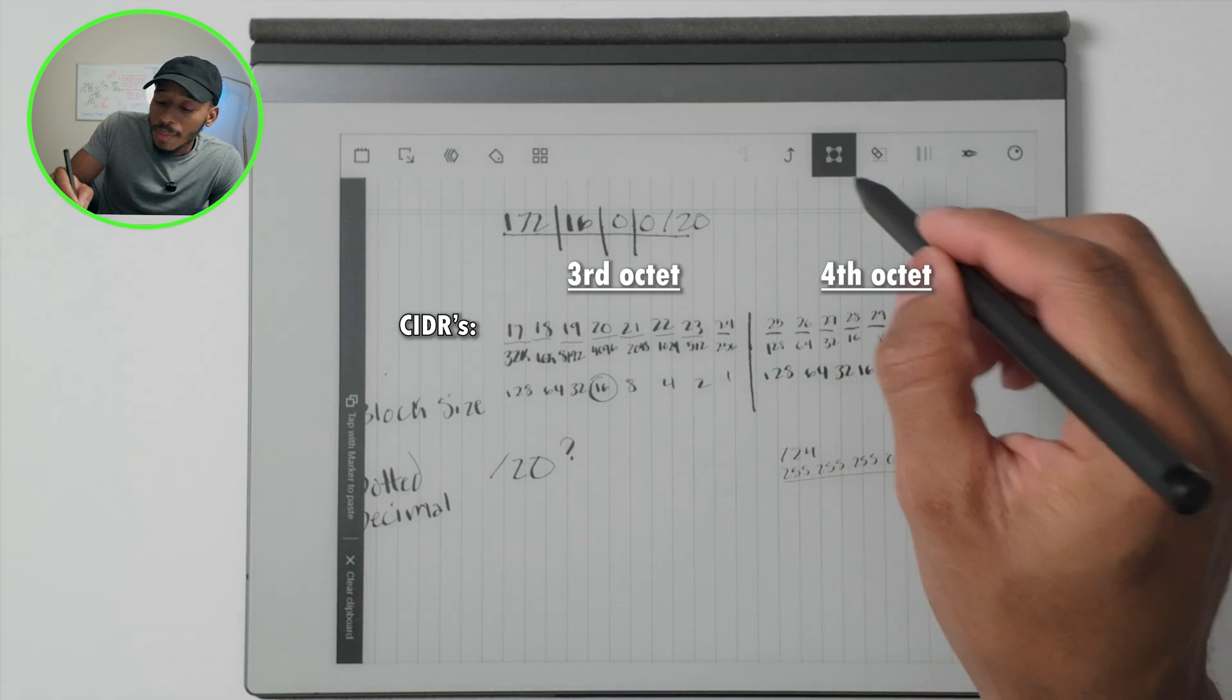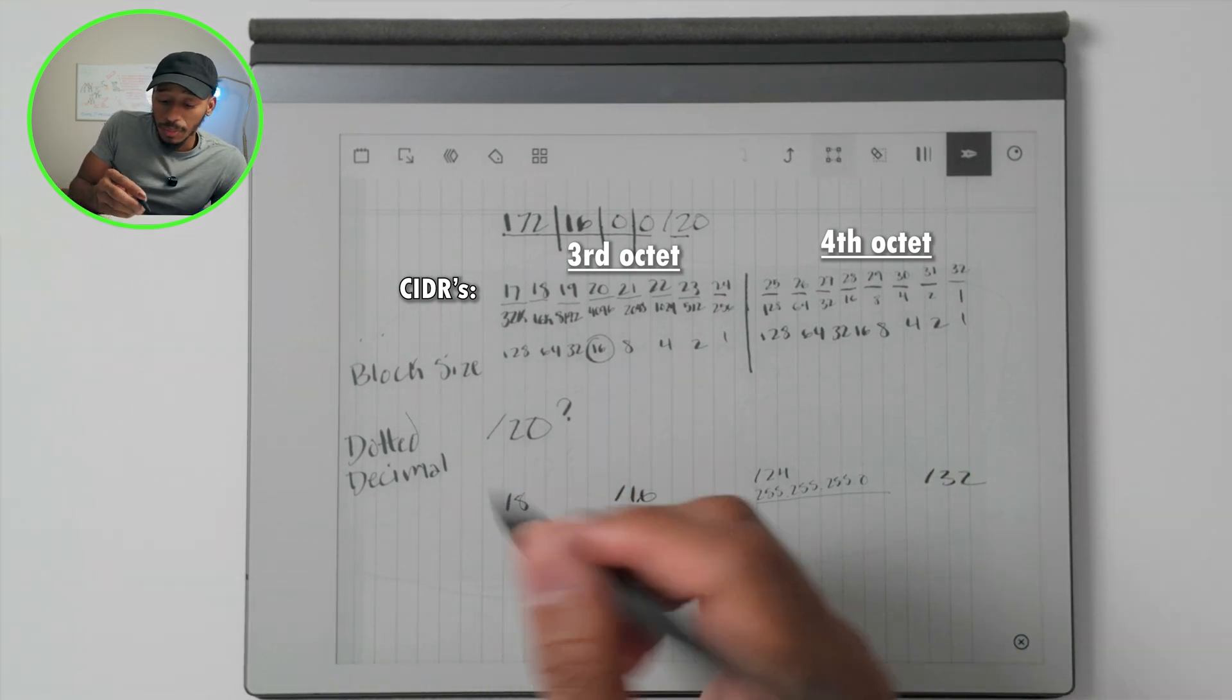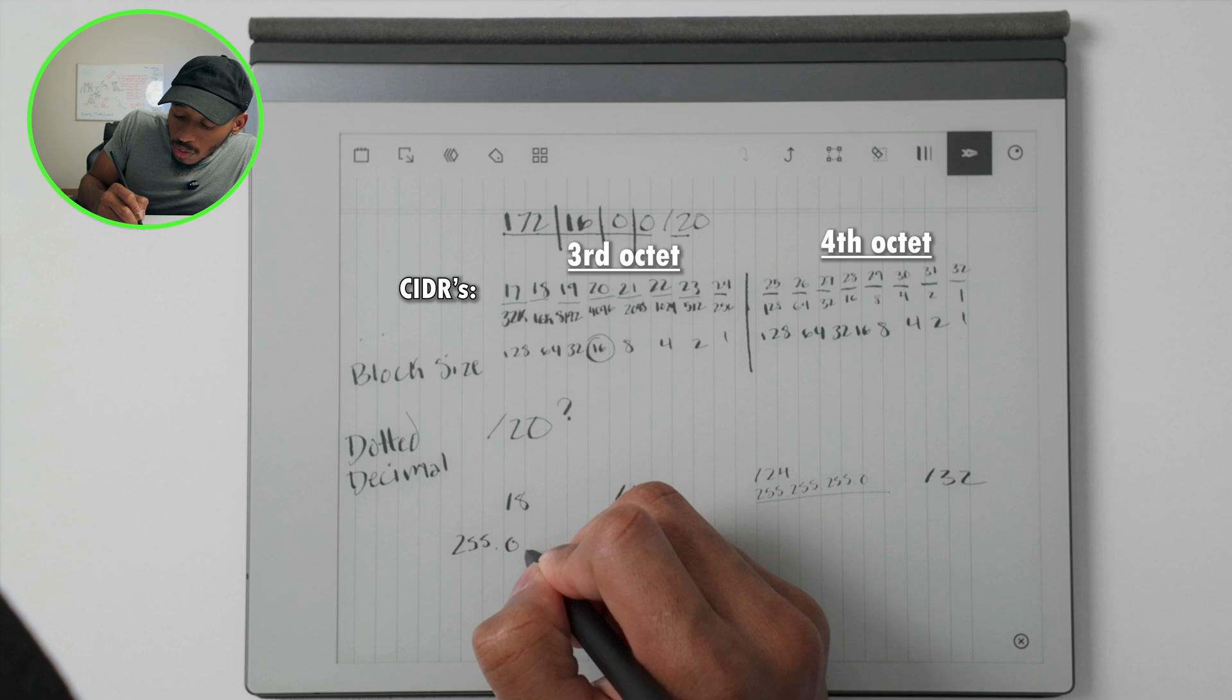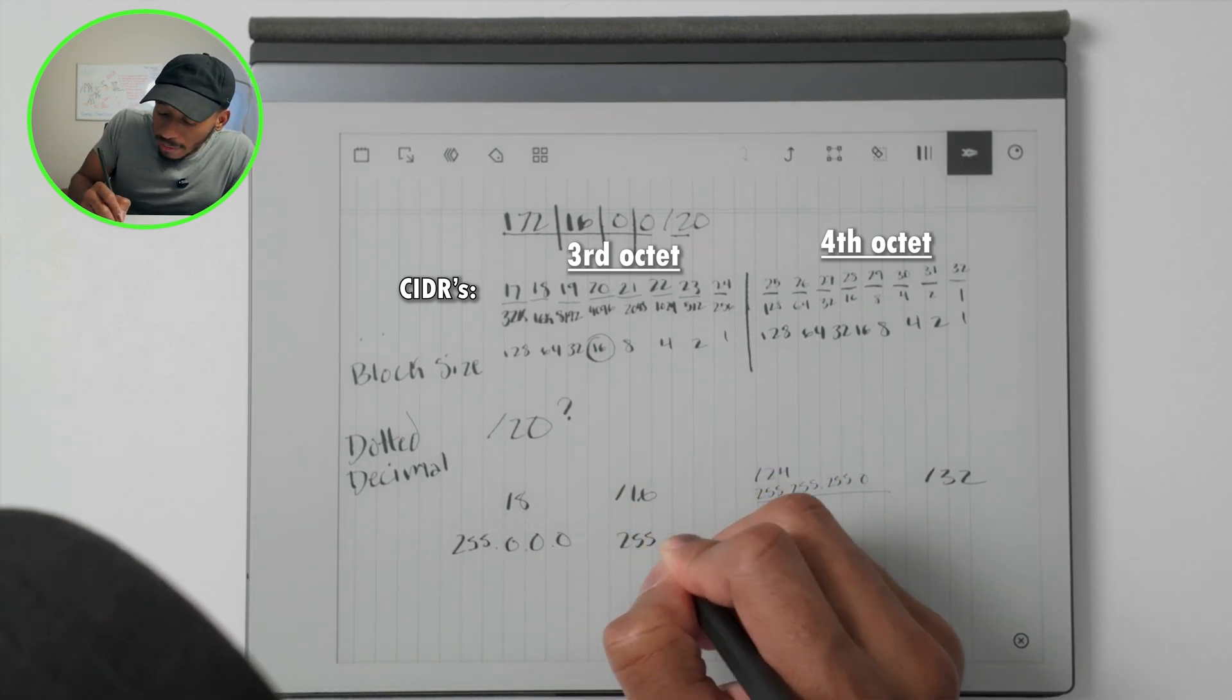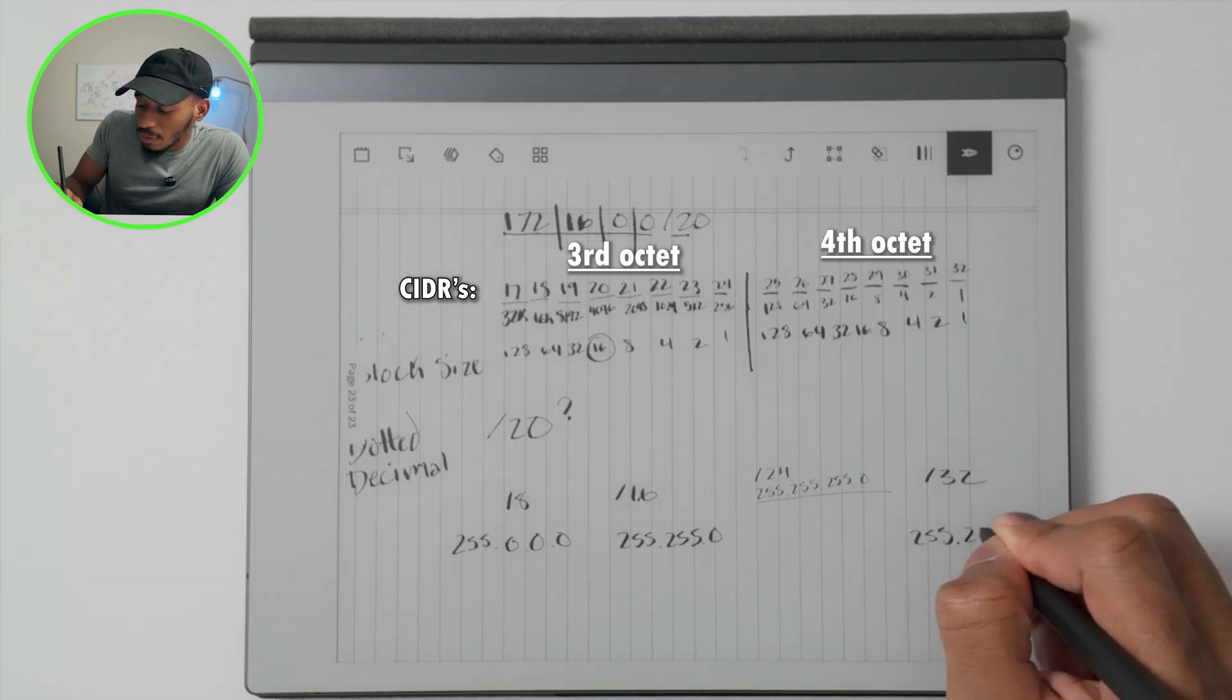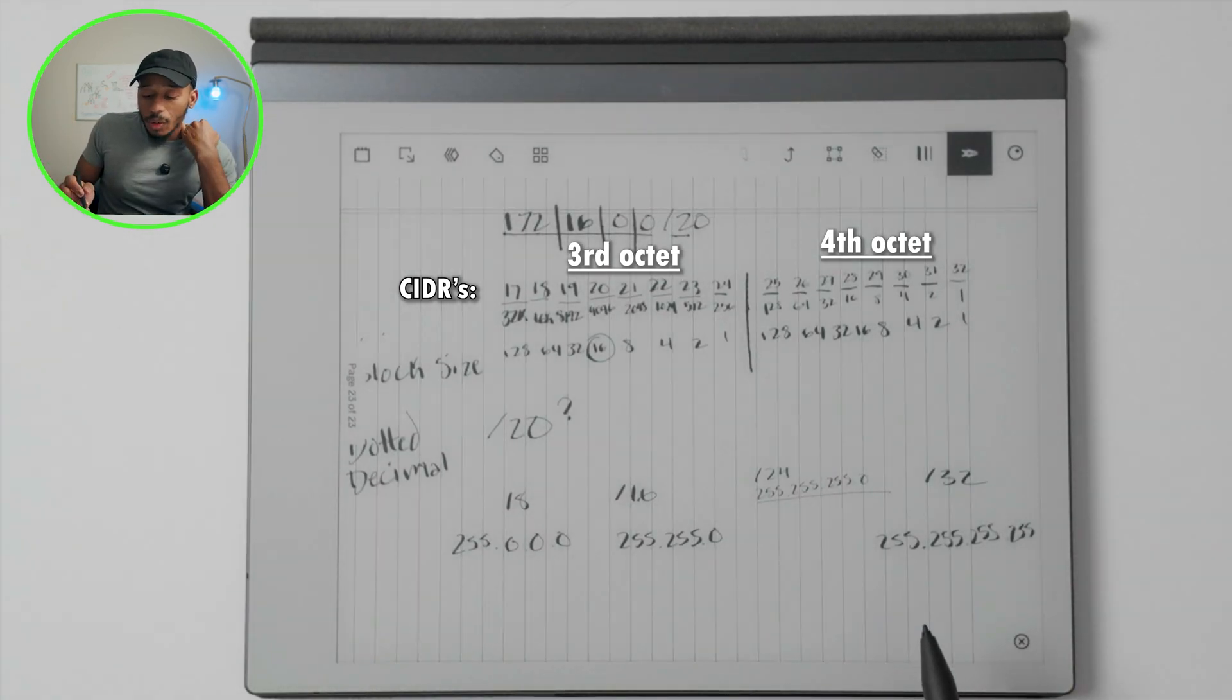Without getting too far in the weeds, we know that the most common subnets would be a /8, /16, and a /24, /32, which is one address by the way. The dotted decimal in this case for a /8 would be represented as 255.0.0.0, and for a /16 it would be 255.255.0.0, and then for a /32 that would be represented as 255.255.255.255.